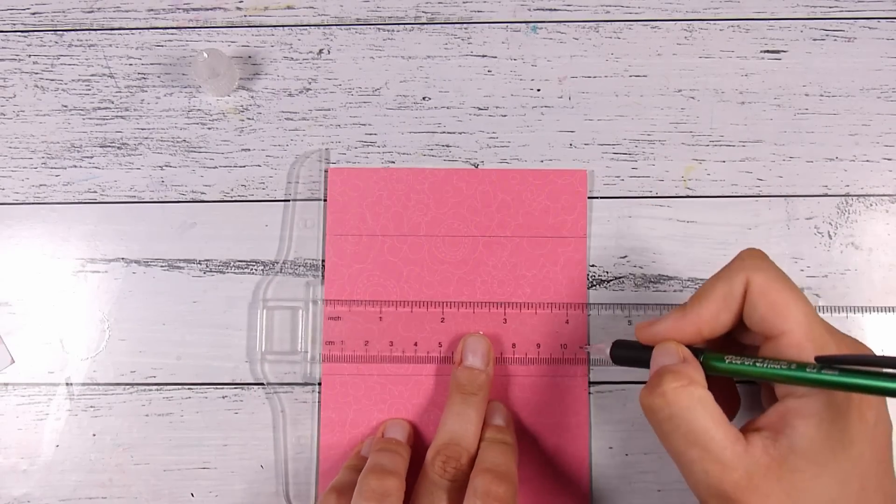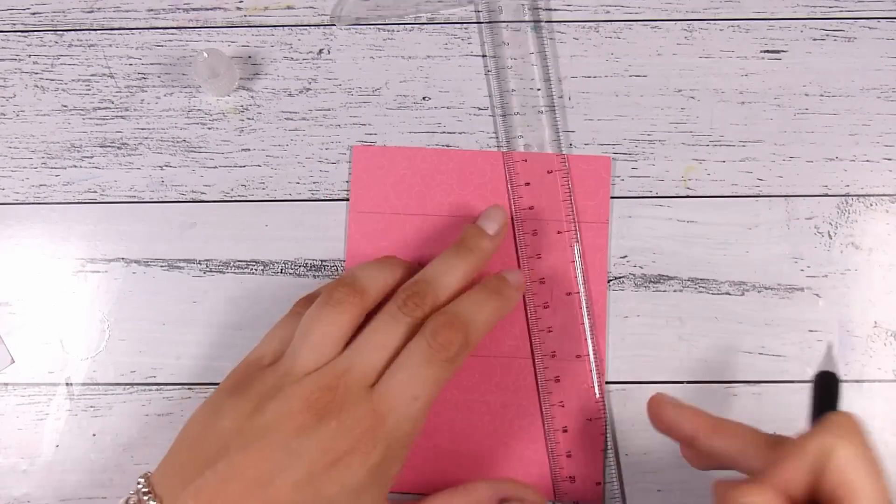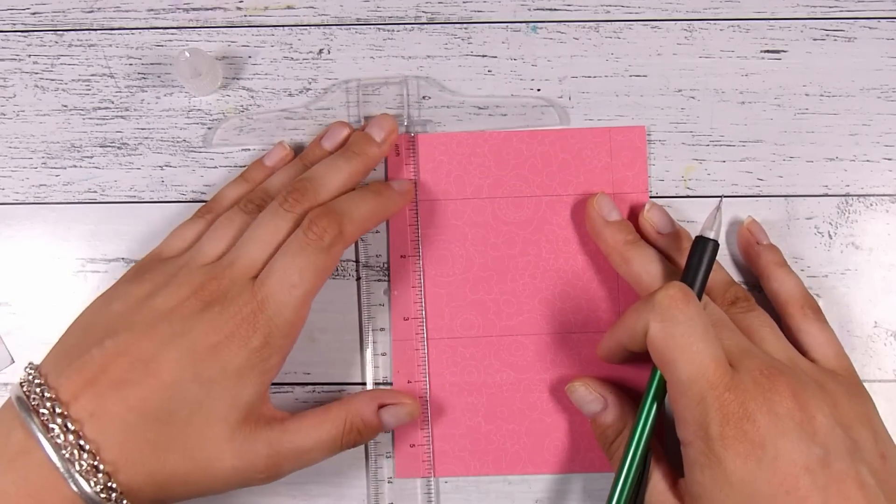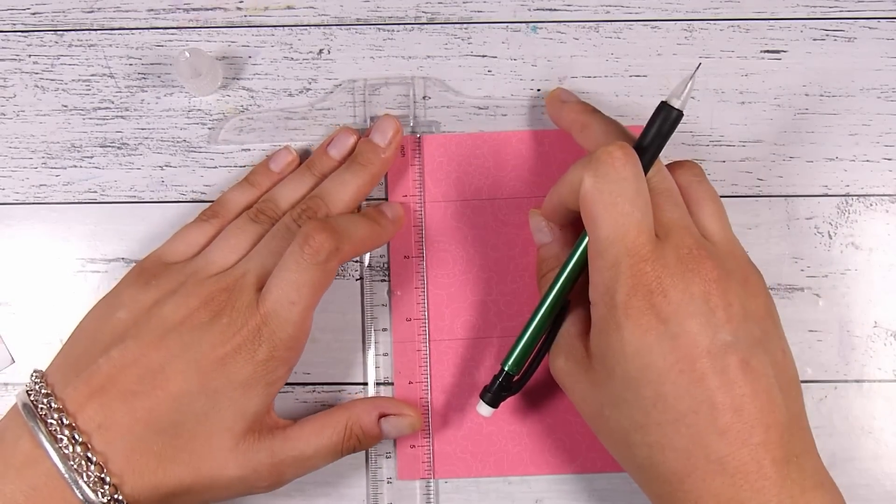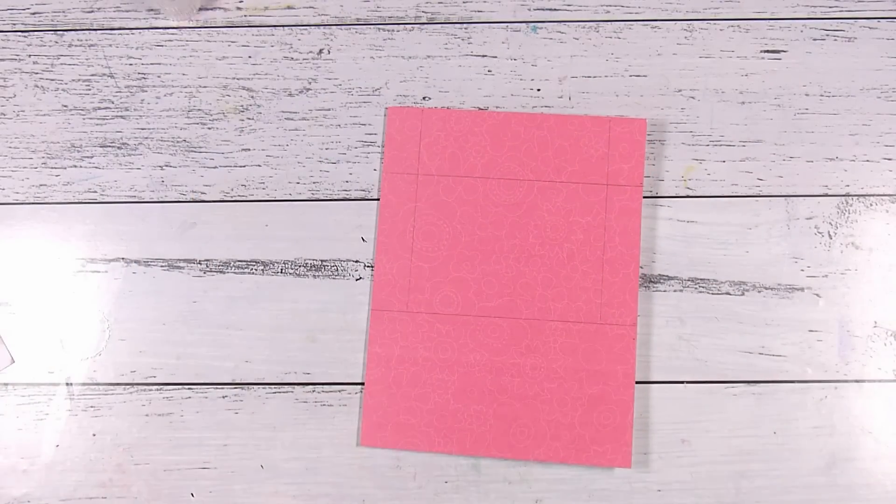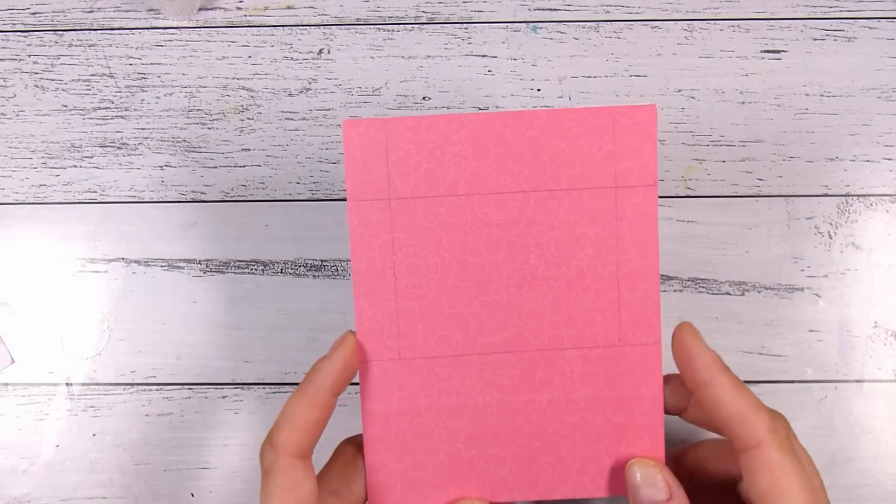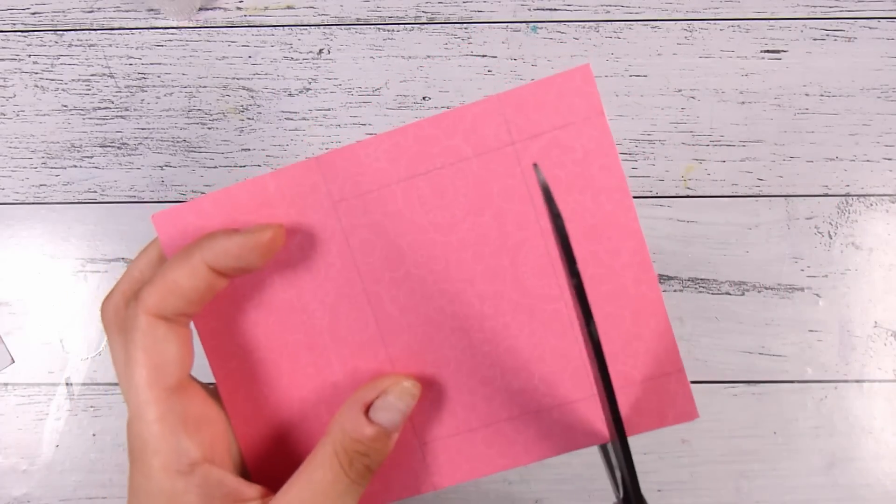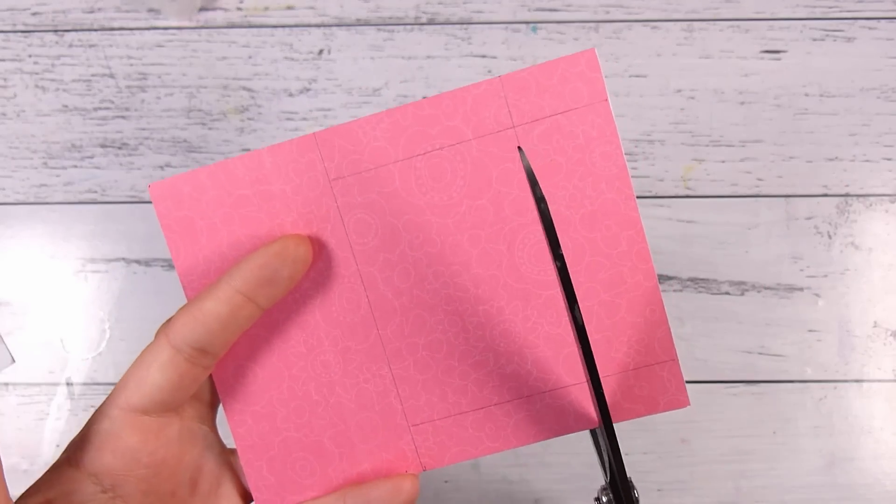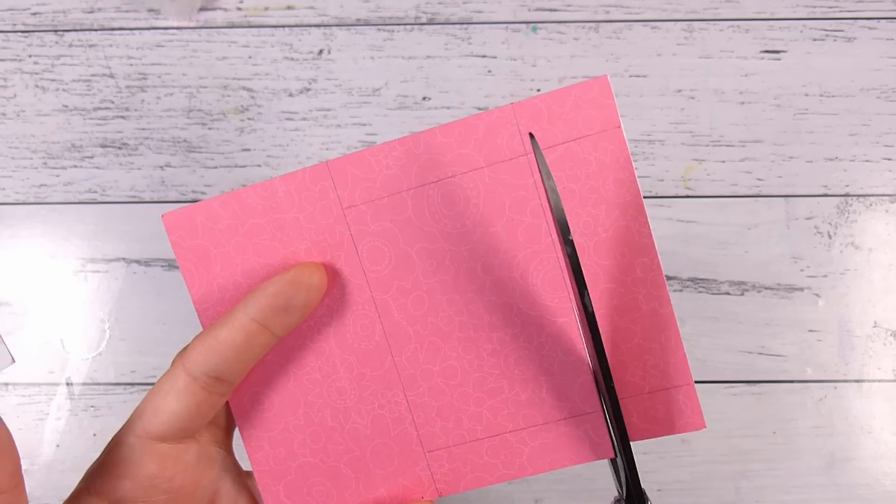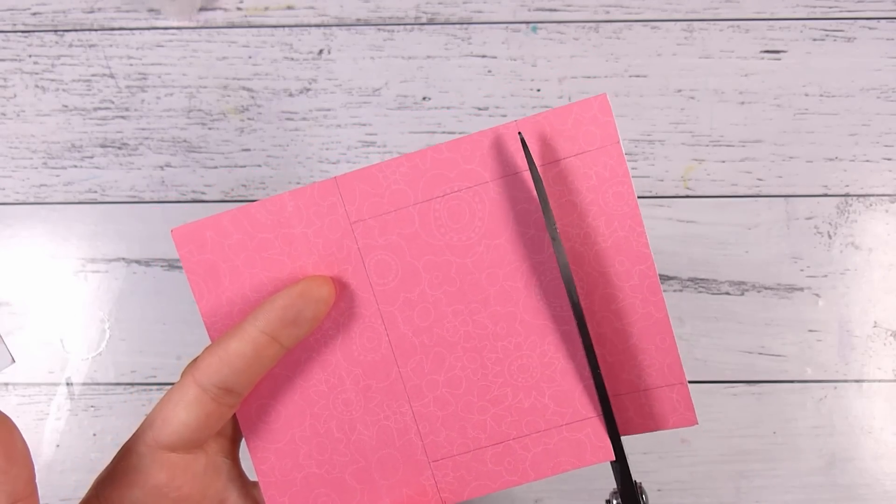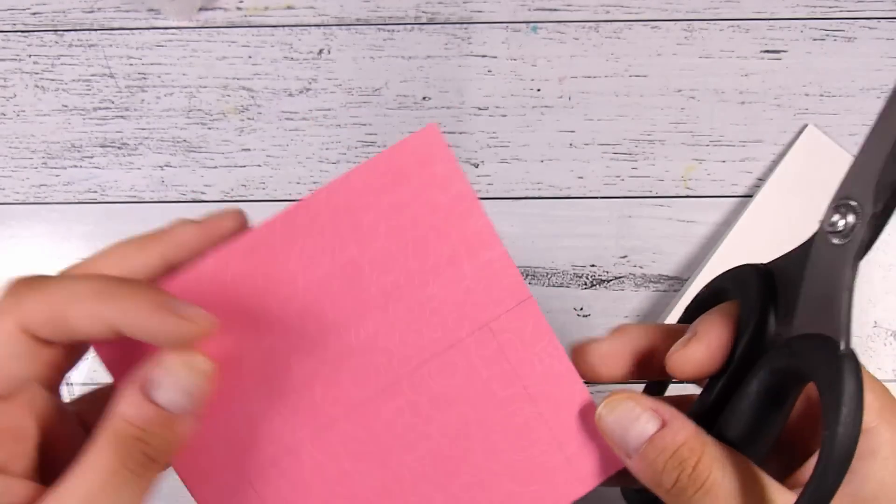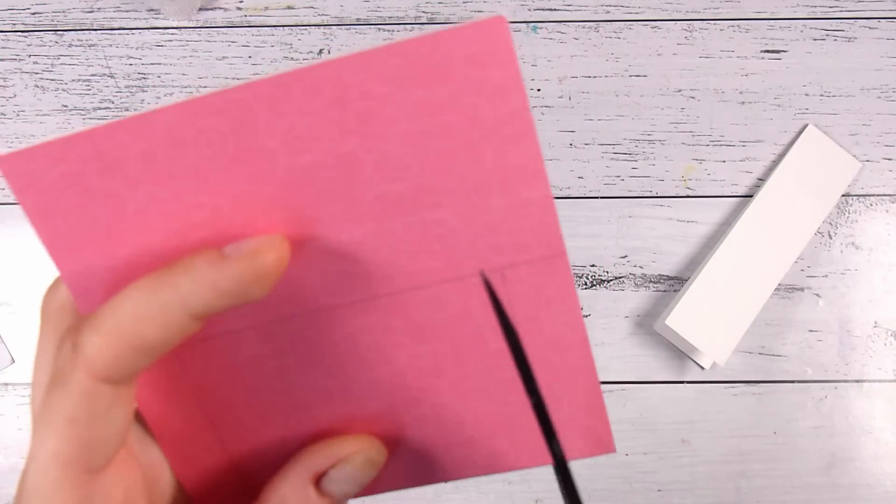From here I'm just going to measure one and a half centimeters. Don't ask me why I changed to centimeters - one side of this ruler has inches and one has centimeters. Usually I would use centimeters here in New Zealand because we use the metric system, however I have become quite accustomed to using inches because it's just mainly what I feel is used in the card making world.